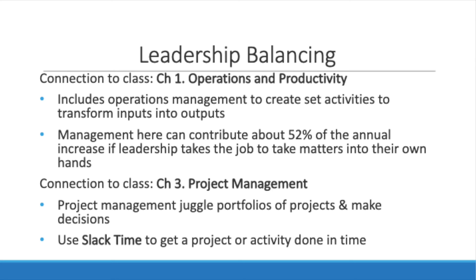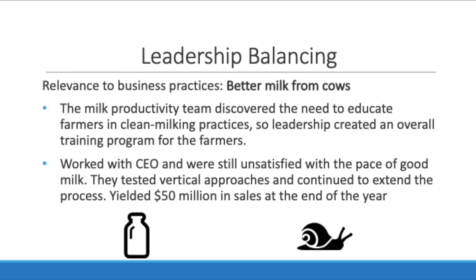Leadership also has to balance slack time to determine how long a project or activity will take. An example from the article: the milk productivity leadership team discovered they needed to educate farmers in clean milking practices because improper milking was causing infected milk. Leadership created an overall training program for farmers about clean practices, then worked with the CEO. Though still unsatisfied with the pace of good milk reaching stores, they tested vertical approaches and extended the leadership team meeting process. After implementing that training system, they yielded more than $50 million in sales by the end of the year.